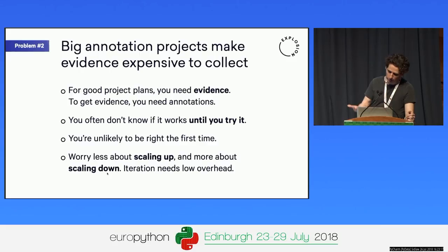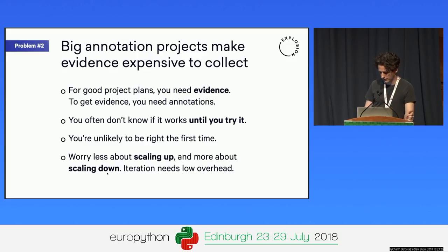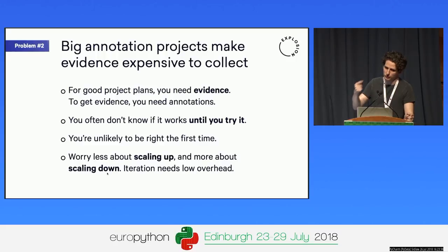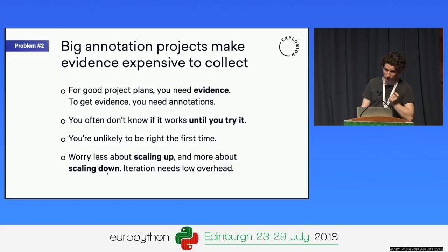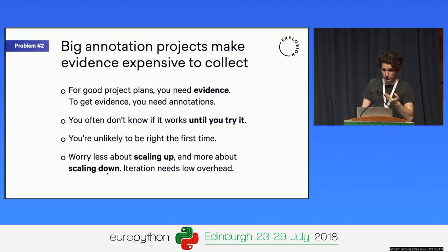What often stops people from taking an iterative approach is focusing mostly on big annotation projects, which makes it very difficult and expensive to collect evidence because of the high start-up cost of each new project. Rather than viewing annotation as something that has to happen at scale with lots of people — where the biggest consideration is driving down the marginal cost of each additional annotation — actually driving down the overhead of annotation projects so that you can try out more things is a much better consideration, and the one that will take more projects from failure to success.